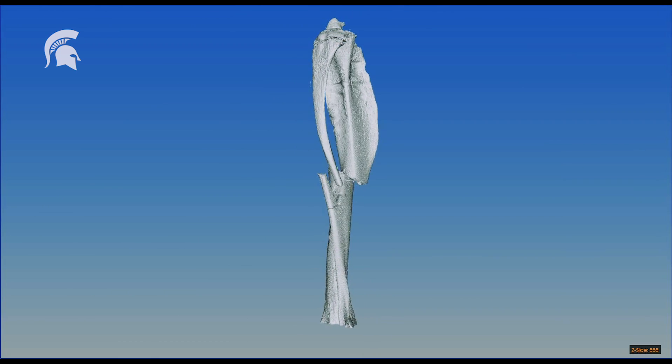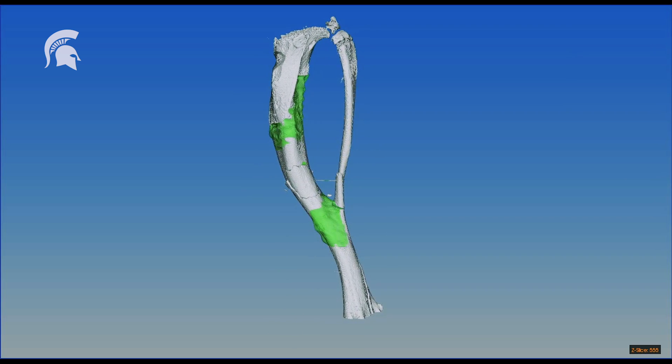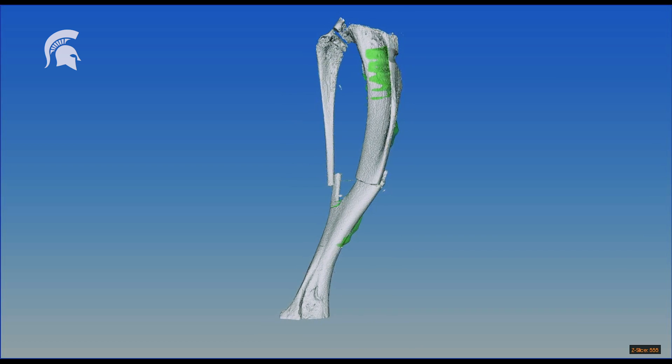At day 10 following fracture, we see the fracture line here, and callus that's formed on this bone is outlined in green. So the green represents the new bone that's formed 10 days following the fracture.